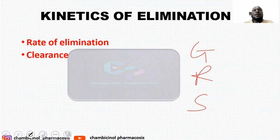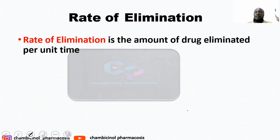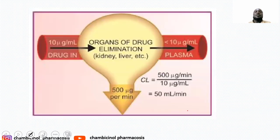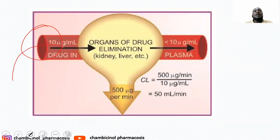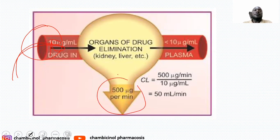We will also look at the kinetics of elimination: the rate of elimination and clearance. Rate of elimination is the amount of drug eliminated per unit time. Clearance is the volume of plasma from which the drug is completely removed per unit time — it measures the ability of the body to eliminate the drug. Clearance equals rate of elimination divided by plasma concentration. For example, if the plasma concentration is 100 mg/L and the rate of elimination is 10 mg/hour, then clearance equals 10 divided by 100, giving 0.1 L/hour.